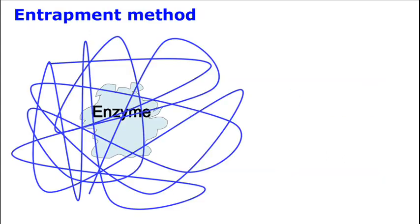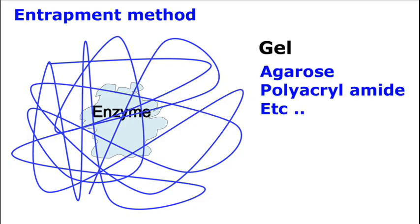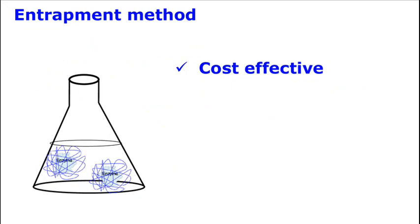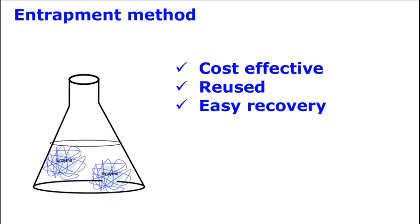The entrapment method involves trapping of enzymes in a matrix of gel. This is a cost-effective method, as the enzyme is trapped and the gel can be reused many times. The recovery of enzymes after the reaction is complete is also very easy.